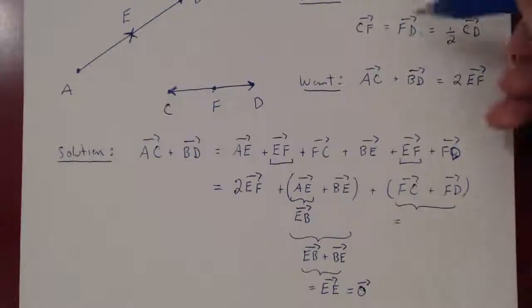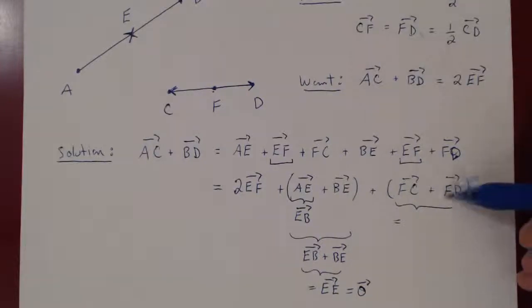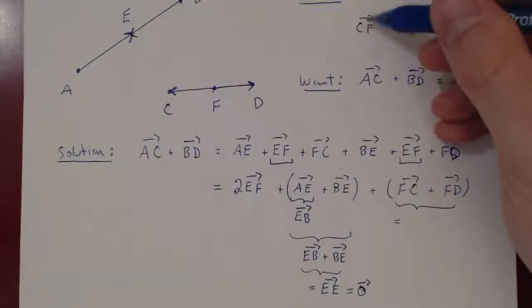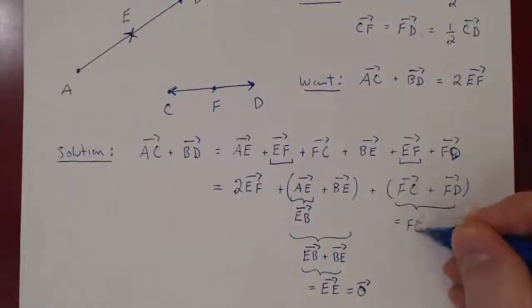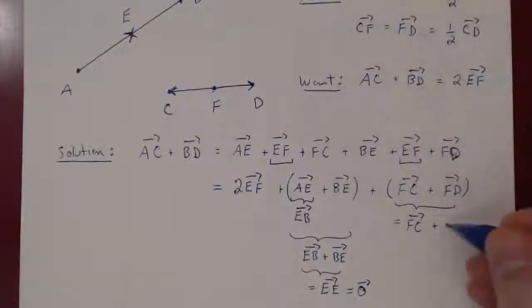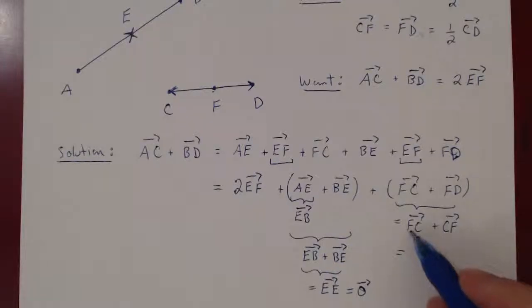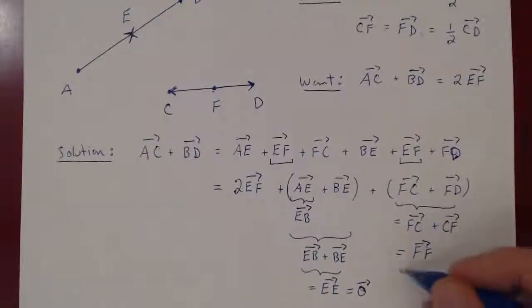The vector FD, you can replace FD by CF. The vector FD is the same as the vector CF, so you get FC plus FD, we know is CF. But if you walk from F to C then from C to F, you've walked from F to F. But the vector FF, because the initial point and the terminal point is the same, is again the zero vector.